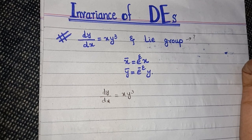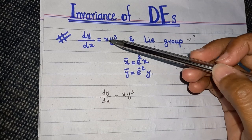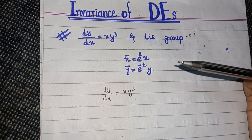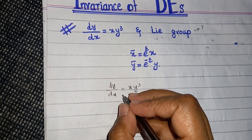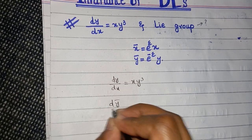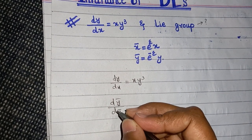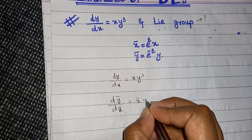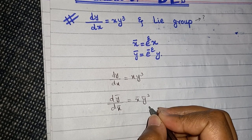We are given a Lie group and we will check that this ODE is invariant under this Lie group of transformations. To check it, first you have to write your differential equation in the form dy-bar divided by dx-bar, meaning you are applying the transformation on your ordinary differential equation, and that is equal to x-bar times y-bar cubed — you have to apply x-bar and y-bar on both sides.